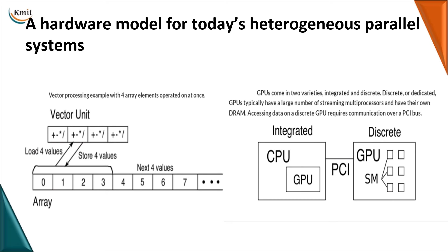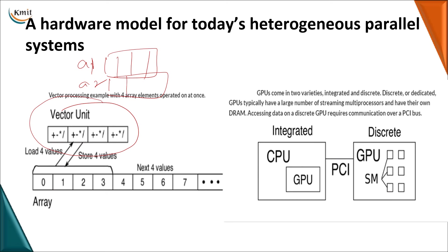The next hardware model is the vector unit. For example, if I want to add two arrays of size 4, the operation is A1 plus A2. Since the operation is the same across all elements, you can use a vector unit device that performs the operation simultaneously. Another hardware model is the special processor — the GPU — which can be present within the CPU (called integrated) or attached separately (called discrete).